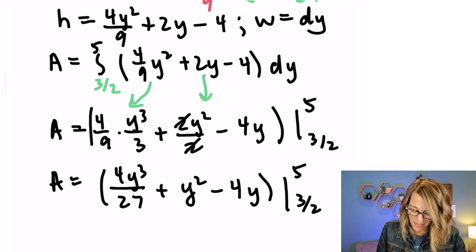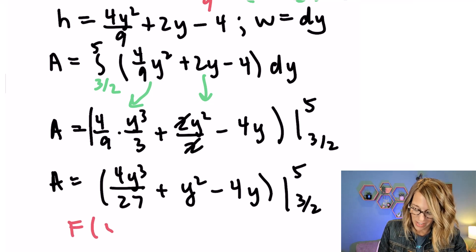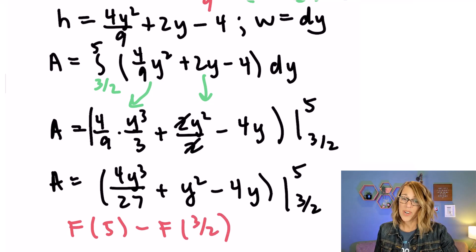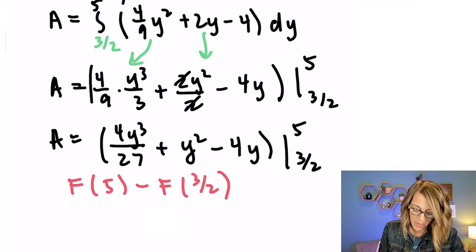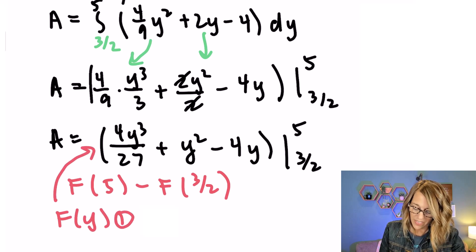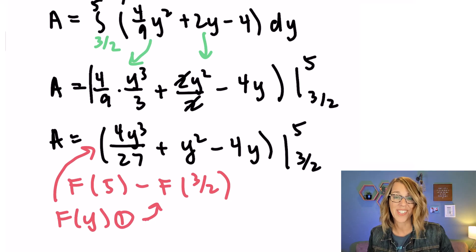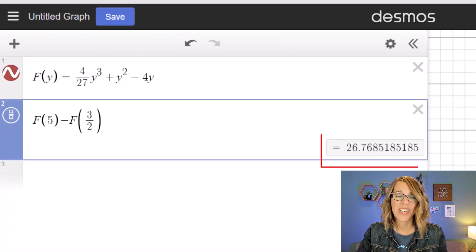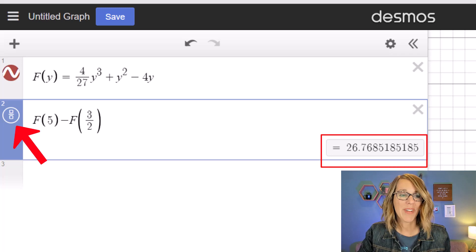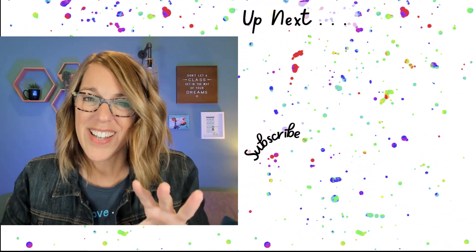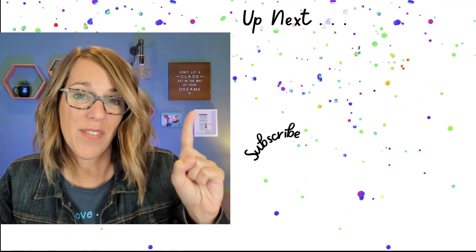Next I'm going to use the Fundamental Theorem of Calculus: the antiderivative evaluated at 5 minus the antiderivative evaluated at 3 halves. That's a lot of work, so I'm going to let Desmos do it. I'll put in my antiderivative as F(y), then have Desmos calculate F(5) minus F(3 halves). Desmos gives us approximately 26.77, and clicking the fraction icon gives the exact answer of 2891 divided by 108. This is hard stuff but you are doing great. Next up are volumes.